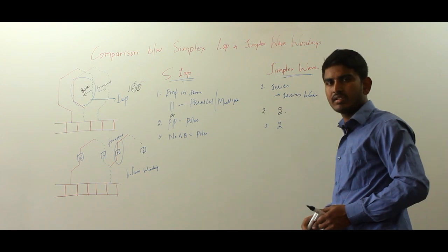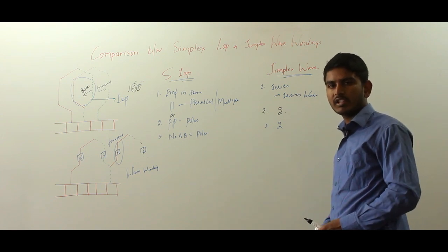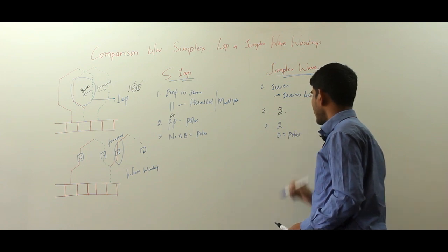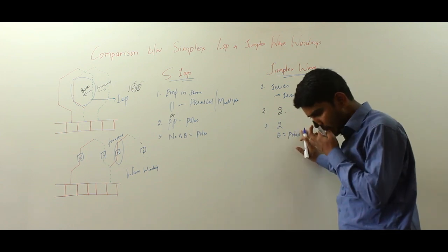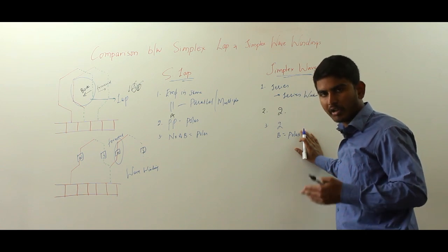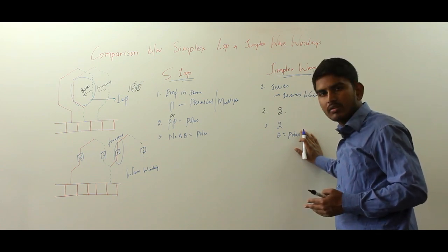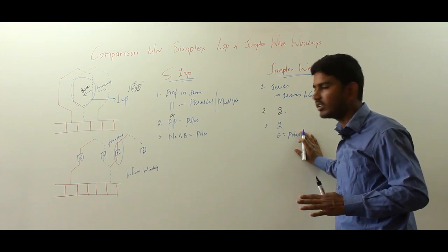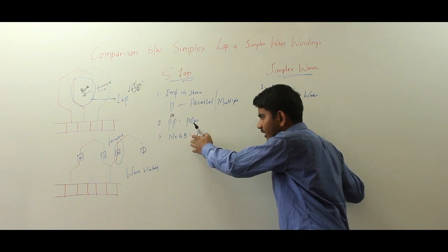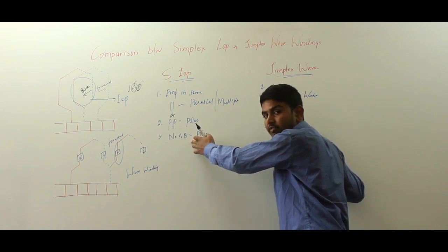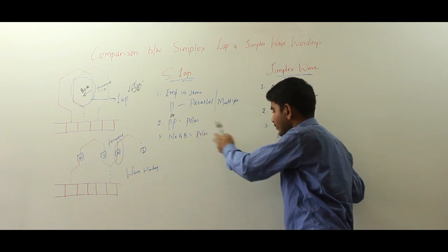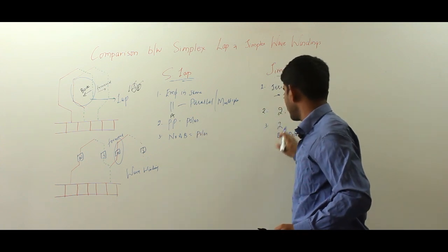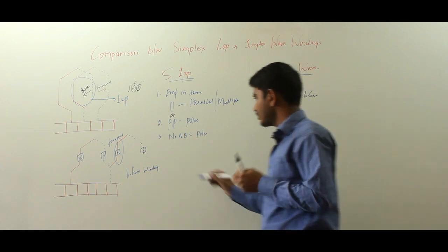For larger machines, for satisfactory performance of commutation, the number of brushes must equal the number of poles in lap winding. An advantage of wave winding is that even if one or more brushes make poor contact with the commutator segments, you can still have good commutation. But if there is poor contact in lap winding, there will not be satisfactory commutation performance. In lap winding, the number of brushes equals the number of poles, while in wave winding only 2 brushes are used.